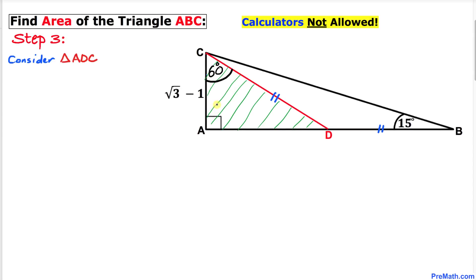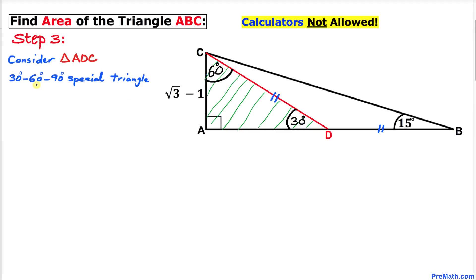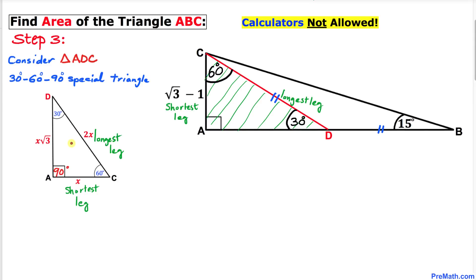Let's focus on triangle ADC. We know angle A is 90 degrees and angle ACD is 60 degrees, so angle ADC has got to be 30 degrees. We can see that this is a 30-60-90 degree special triangle.